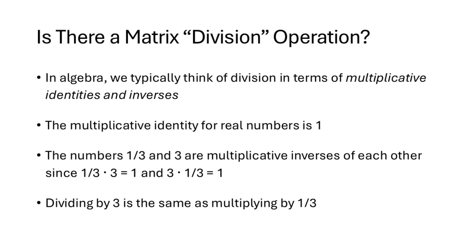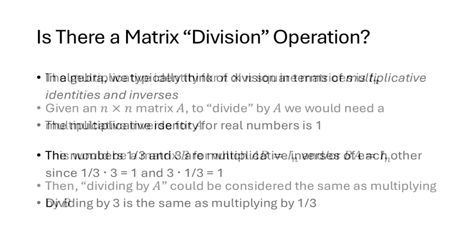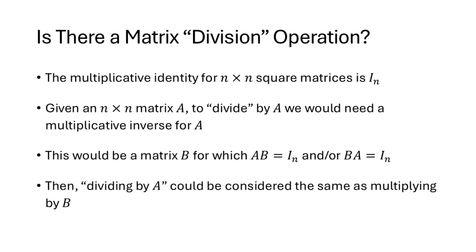We've talked about how to add, subtract, and multiply matrices. What about division? In algebra, we think of division in terms of multiplication and multiplicative inverses — for example, dividing by 3 is the same as multiplying by one-third. For matrix division, we need a matrix B such that A times B equals the identity matrix, or B times A equals the identity matrix, or both. Since matrix multiplication is not commutative, you could have AB equal the identity but BA not equal the identity.